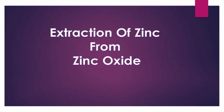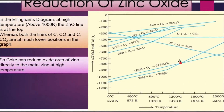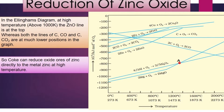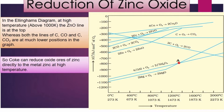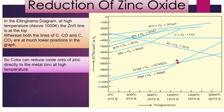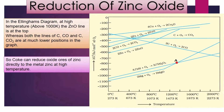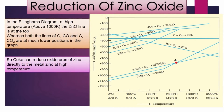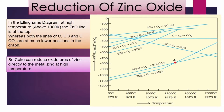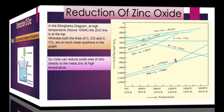Extraction of zinc from zinc oxide. In the Ellingham diagram, you can see the formation of zinc oxide line lies at the top of the carbon to carbon monoxide line and carbon to carbon dioxide line only at higher temperature, that is above 1000 Kelvin. So coke can be used as a reducing agent to reduce zinc oxide to metallic zinc only at higher temperature.